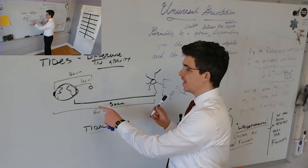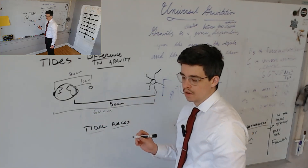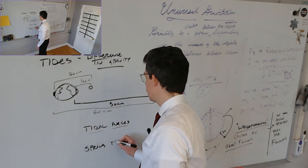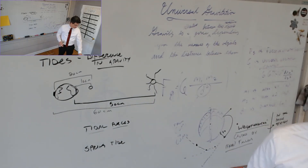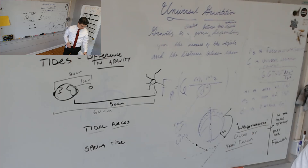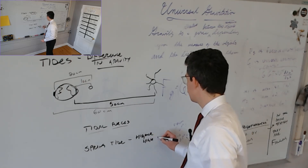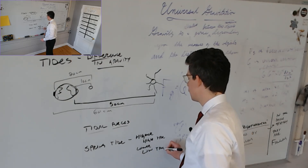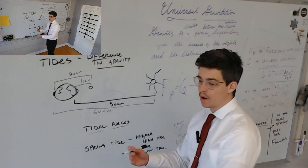The sun does exert a tidal force on the Earth. So when the sun and moon line up, we call that a spring tide — when the high tide is higher and the low tide is lower. That happens when the moon and the Earth and sun all line up: a higher high tide and a lower low tide.